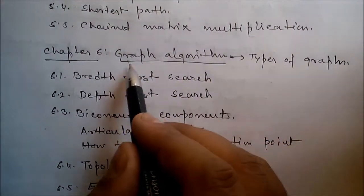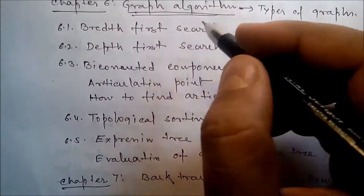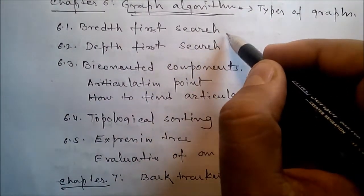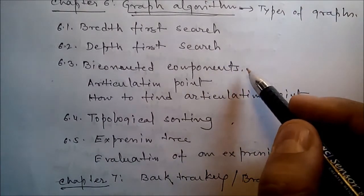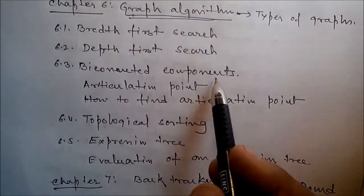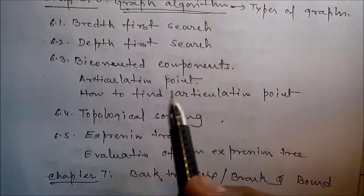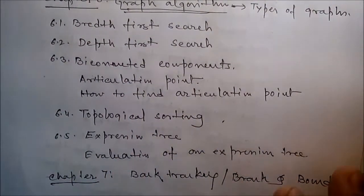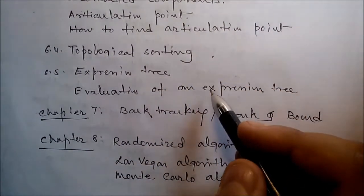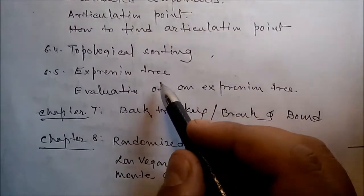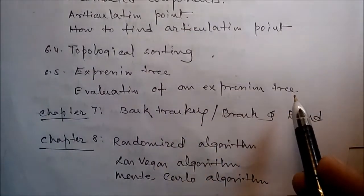In Chapter 6, we'll talk about graph algorithms and different types of graphs. We'll cover depth-first search algorithm, biconnected components — including articulation points and how to find them — topological sorting, expression trees, what is an expression tree, the use of expression trees, and evaluation of expression trees.